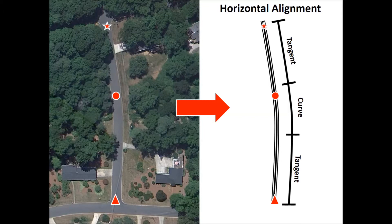These curves are superelevated to maintain the vehicle's equilibrium as it passes through the curve, while the tangent roadway section has a normal crown cross slope which is intended to efficiently drain water from the roadway.